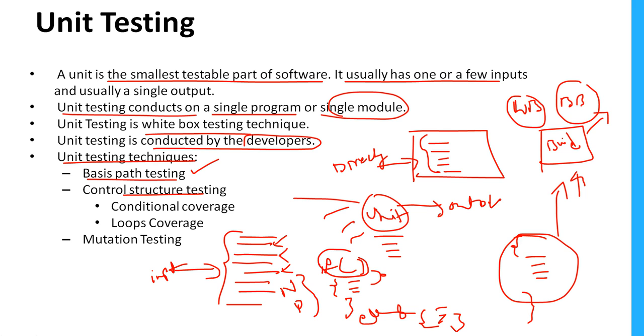These are the testings done by the developer as part of unit testing. These are techniques like basis path testing, control structure testing. We'll discuss these in detail in coming sessions. Mutation testing is another technique. Suppose they created a certain method in the program.